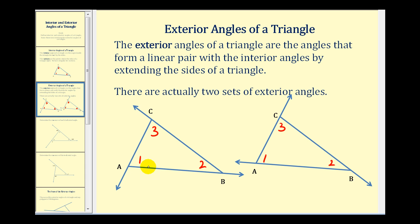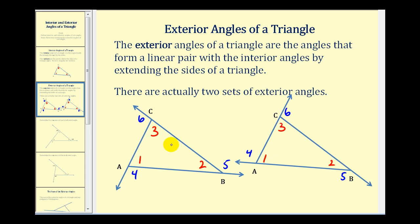So again, if angles one, two, and three are interior angles, then angles four, five, and six would be exterior angles for this triangle — notice they form linear pairs with the interior angles. Similarly on the other triangle, angles four, five, and six would be the exterior angles, and they again form linear pairs with the interior angles. It really doesn't matter which sides you extend, because angle four is congruent to angle four, angle five is congruent to angle five, and angle six is congruent to angle six.